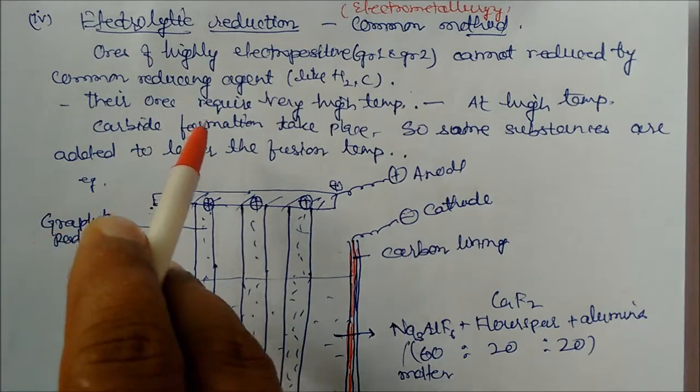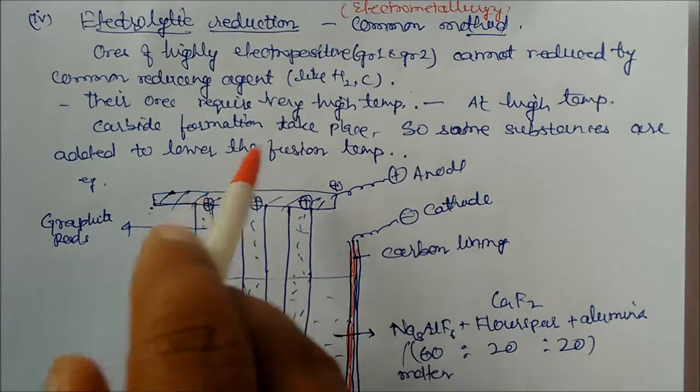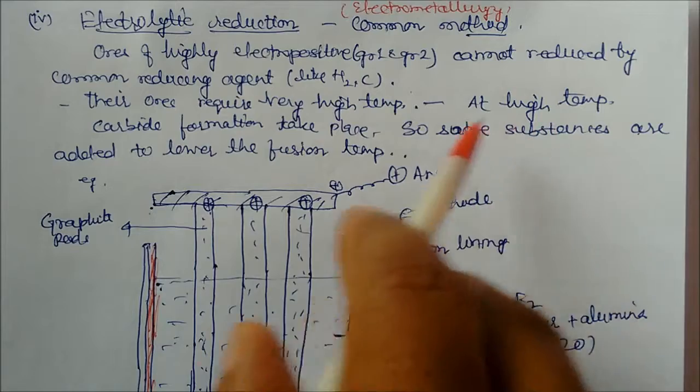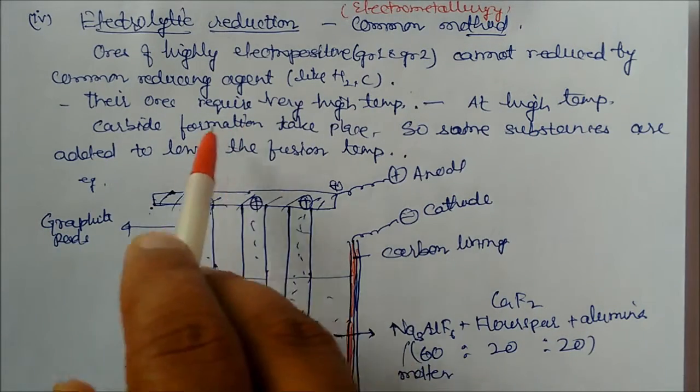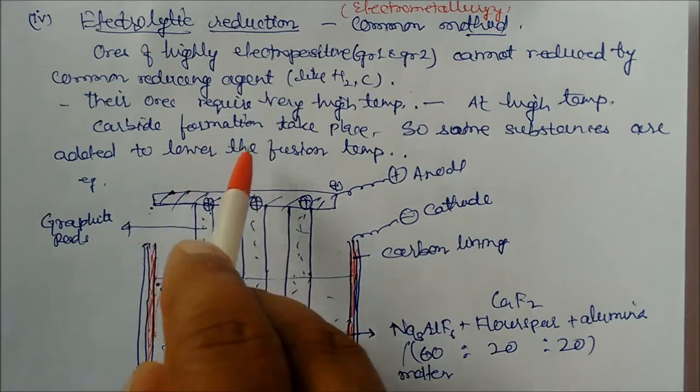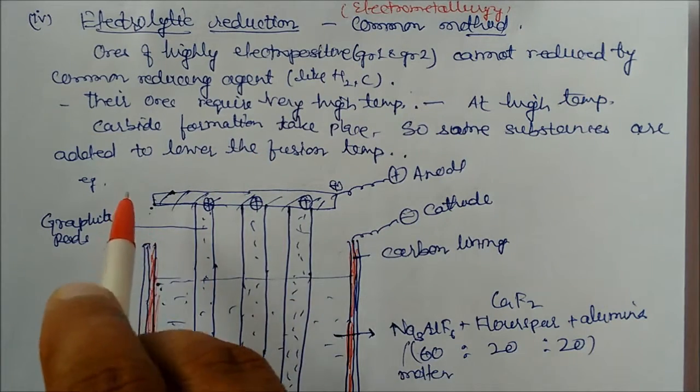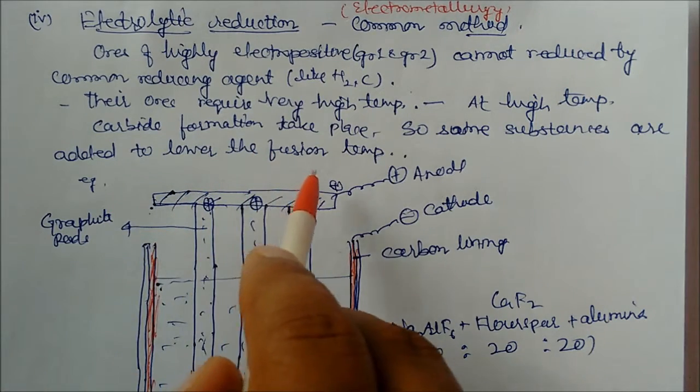But at high temperature, what happens? Carbon will react with that metals and carbide formation take place. So some substances are added to lower the fusion temperature.